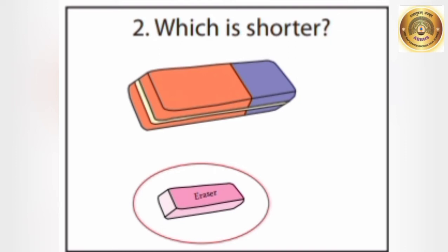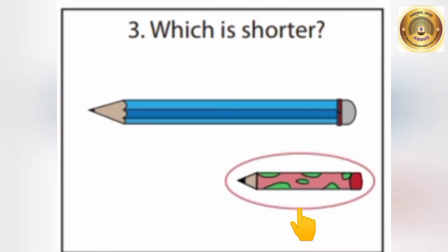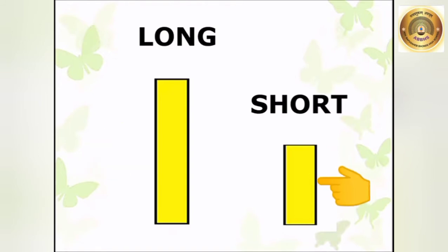Now, tell me which pencil is shorter? Yes, this pencil is short. So, we will circle the short pencil. Now, let us see some more examples. Children, there are two rectangles — this one is long and this one is short.